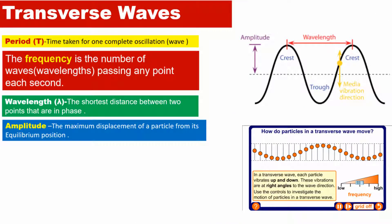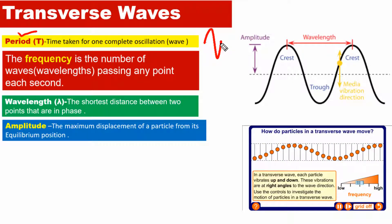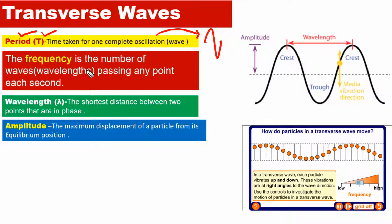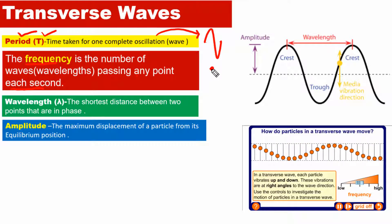Let's try to understand some basic terms about waves. The first term is time period — it simply means the time taken for one complete oscillation. The next term is frequency, which is the number of waves passing any point each second, or the number of waves passing any point per unit time.